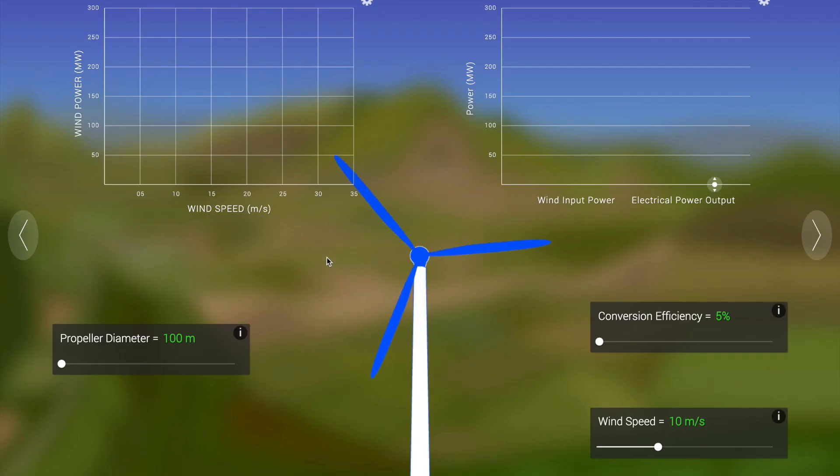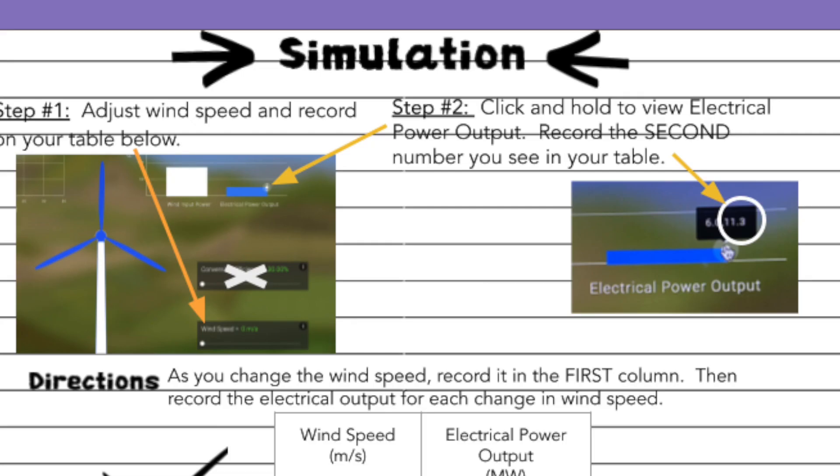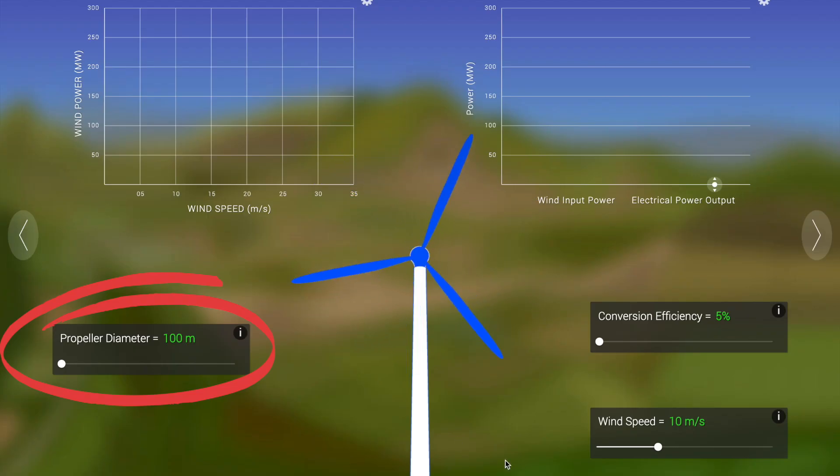When you open the simulator, you'll see a wind turbine operating. Your notebook page is going to show you the different things that you need to pay attention to in order to do your investigation. On the left side of your screen, you're going to see propeller diameter. It doesn't matter what you set your diameter at; just make sure it stays the same throughout the entire investigation. A good investigation keeps the variables controlled.